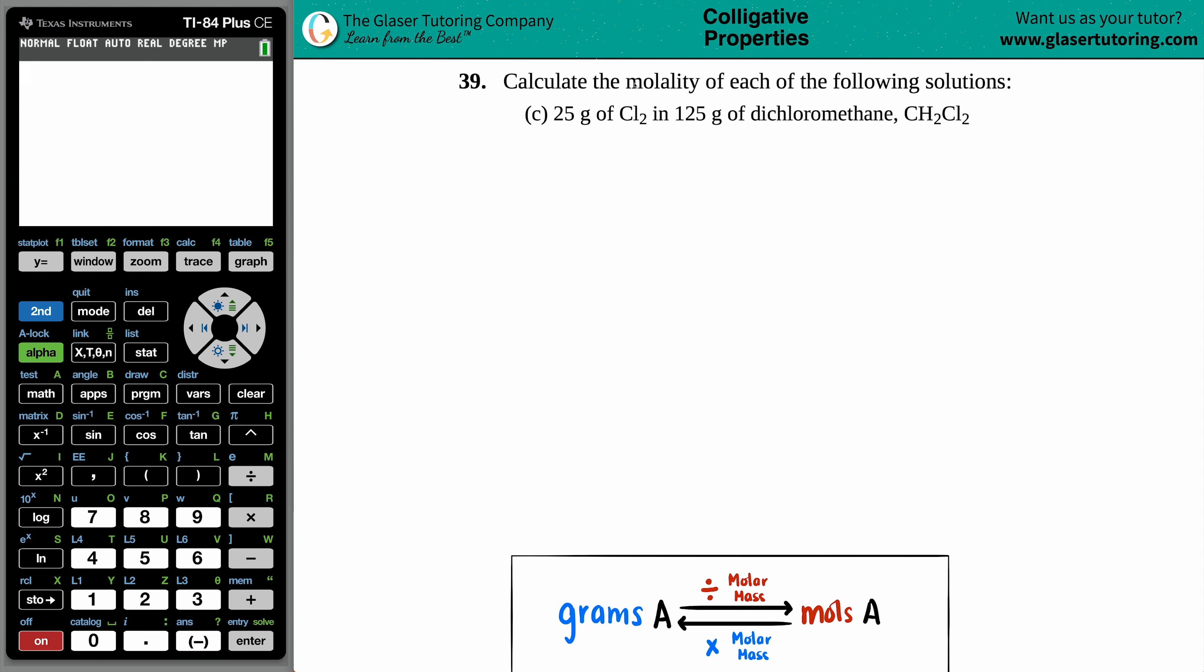Number 39. Calculate the molality of each of the following solutions. Letter C. In this case, we have 25 grams of Cl2 in 125 grams of dichloromethane, which is CH2Cl2.